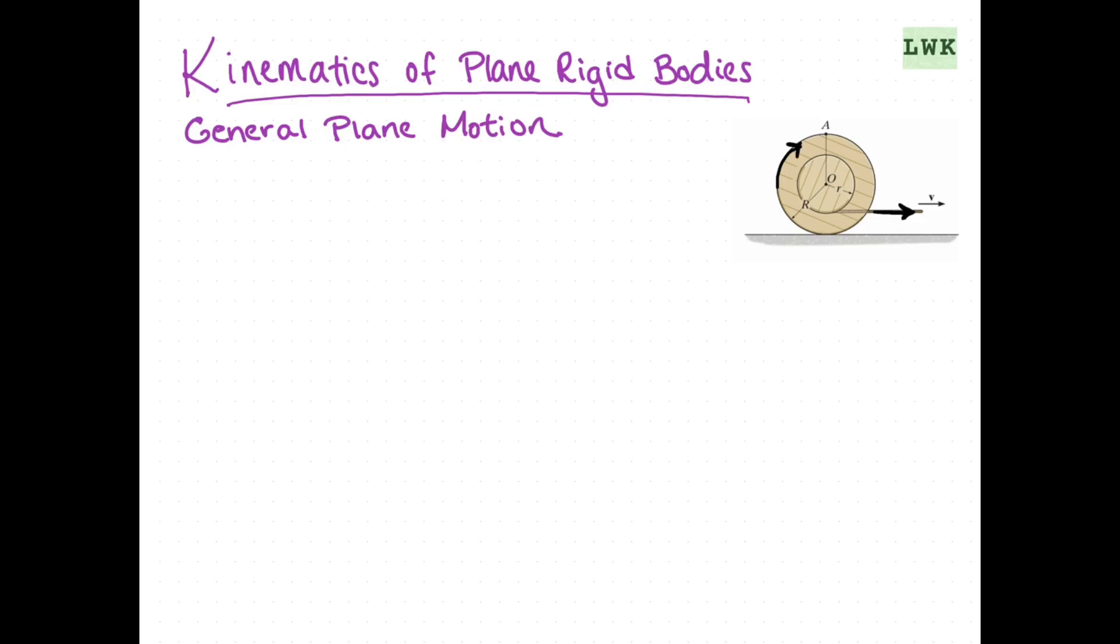Our general plane motion, you can see it as an example in this picture we have. We have a wheel and it's obviously rotating, but it's also being pulled straight across. So here's an example of general plane motion.